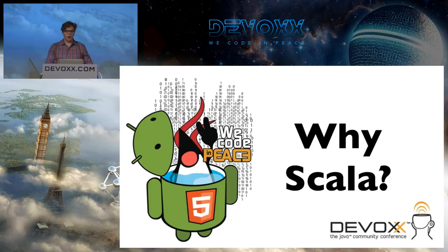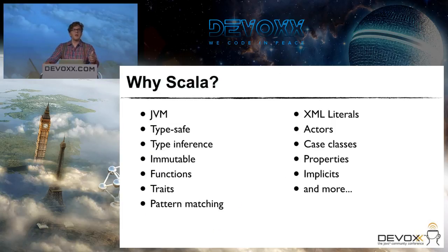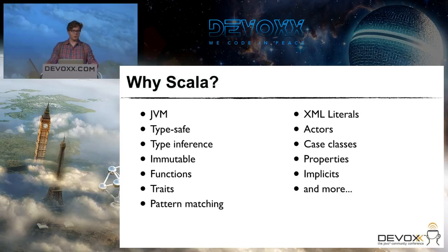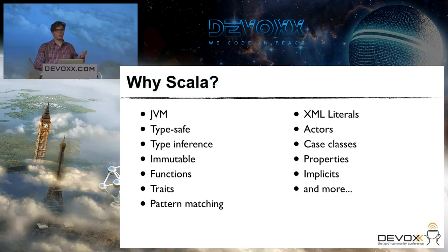The first question you might want to ask yourself is: why would I use Scala? Well, there's a lot of advantages. First, it runs on the JVM, so you probably have some kind of production environment already handling the JVM — Tomcat, TC server, anything like that. It's type safe, which appeals to me. There's also type inference, first-class functions as opposed to Java's callback interfaces, traits, pattern matching, XML literals, actors, and case classes. All these features are a compelling reason to use Scala.